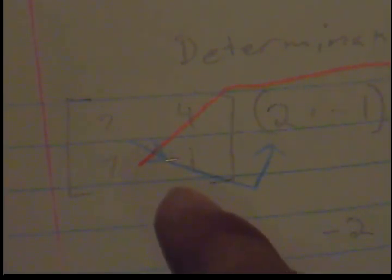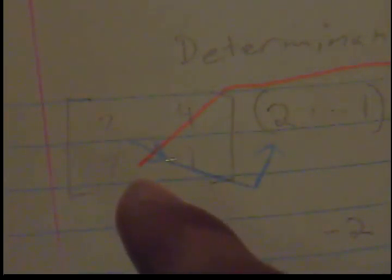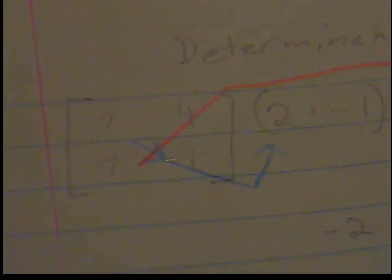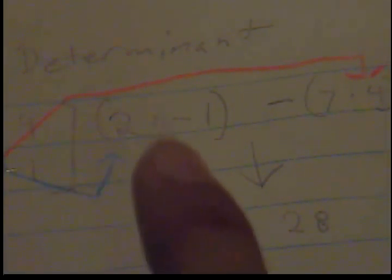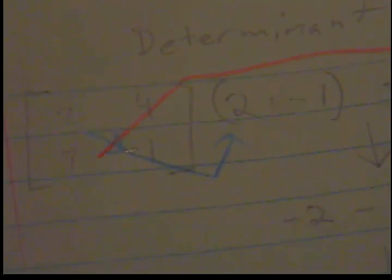And then using it with numbers: we would have a 2x2 matrix which is 2, 4, 7, and negative 1. You multiply diagonally down to get 2 times negative 1, minus multiply diagonally up, 7 times 4. You get the parentheses out and you get negative 2 minus 28, which is negative 30. So your determinant is negative 30.